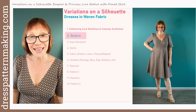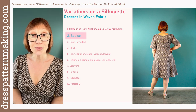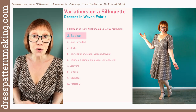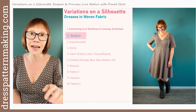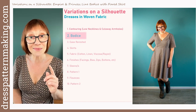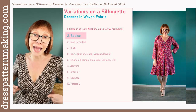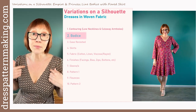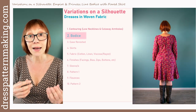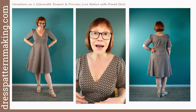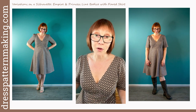This video is number two in a series of ten titled 'Variations on a Silhouette.' Video number one was contouring, which covered lowered necklines and cutaway armholes. If you haven't already watched that one, I recommend you do so because that is assumed knowledge. In this video I'll be covering drafting the bodice pattern pieces which include an empire line and princess design lines, walking you through drafting those bodice pieces step by step.